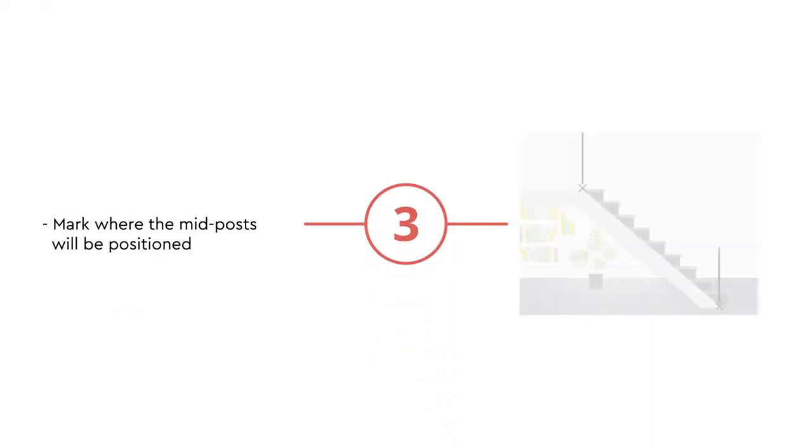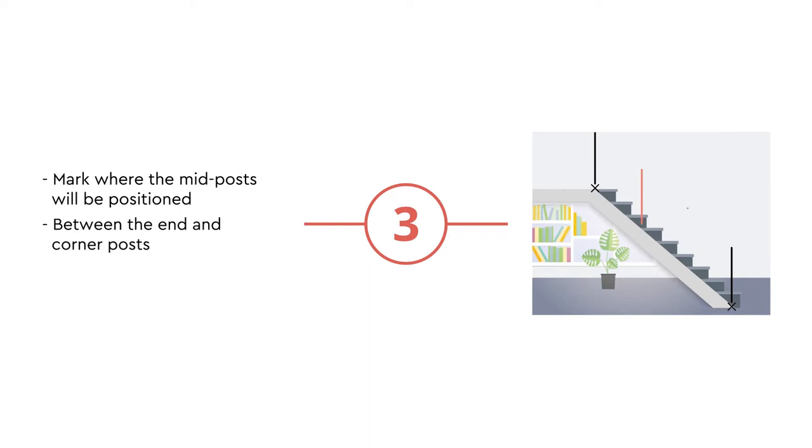Next, mark where the mid posts will be positioned between the end and corner posts. These should be marked between 1000 and 1200mm.